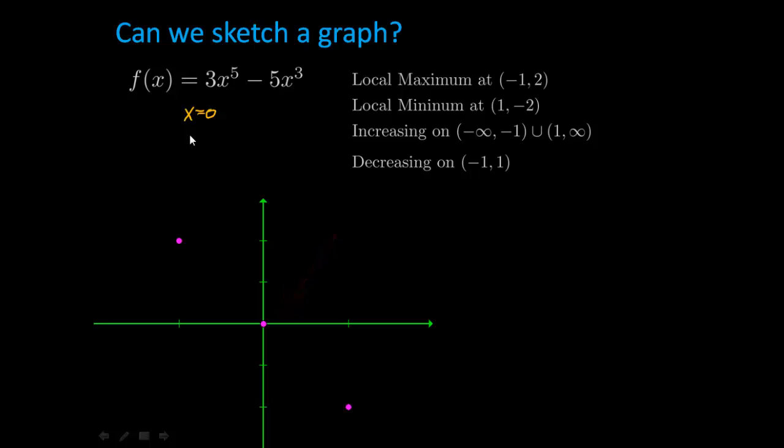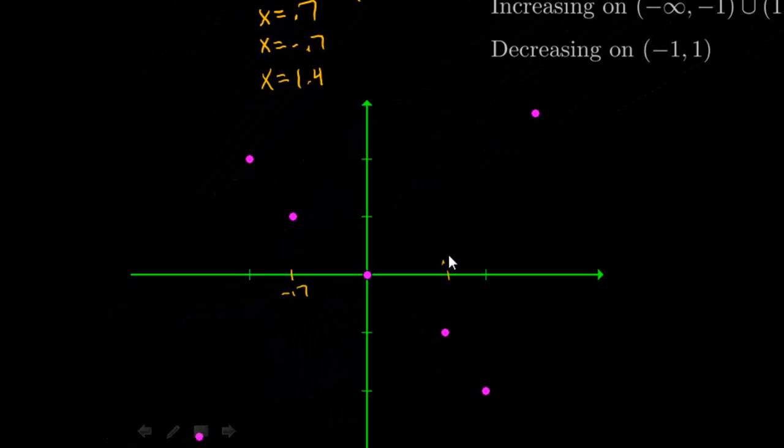Next, I'm just going to plot some other points, like 0.7, which would be somewhere around here. These are just some additional points. I think 1.4 and negative 1.4. So if I plot all those points, this is what I get. Here is that negative 0.7. Here's positive 0.7, 1.4, and so on. So again, this is just to help me get an idea of what the graph looks like. Now since I know that I'm increasing and decreasing on certain intervals, I can connect dots based on that. So for example, I know that I'm increasing to negative 1.